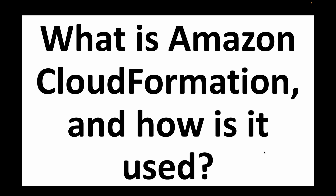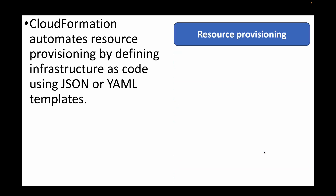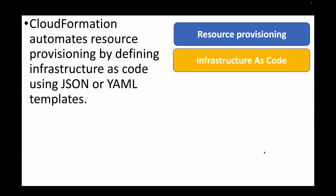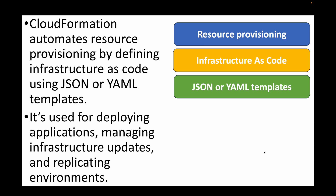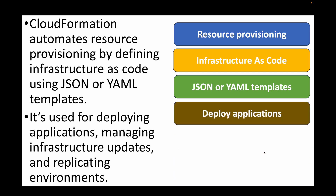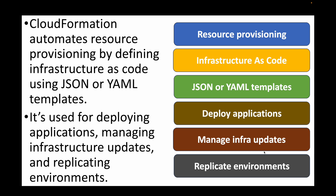The next question is: what is Amazon CloudFormation and how is it used? CloudFormation is your infrastructure as code service in AWS. We can use it to provision resources by writing code in JSON or YAML templates. CloudFormation can be used to deploy applications, manage infrastructure updates, and replicate infrastructure across multiple environments — such as dev, staging, and UAT — using the same code.